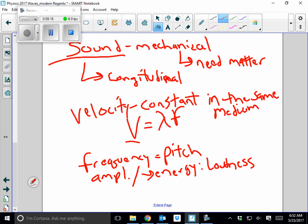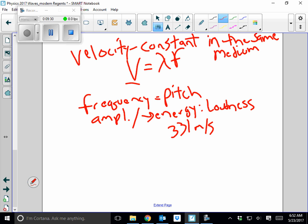With sound, a reflected sound wave is called an echo. The velocity is constant which is 331 meters per second at standard atmospheric pressure. And if I change my pitch I change my wavelength.